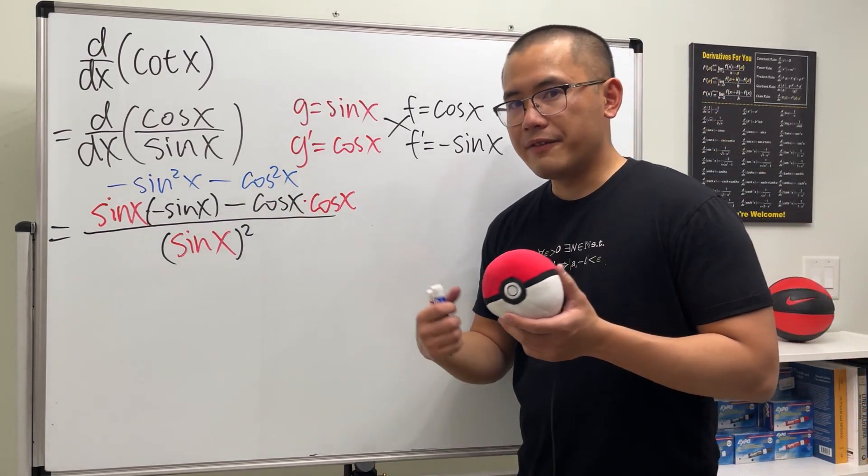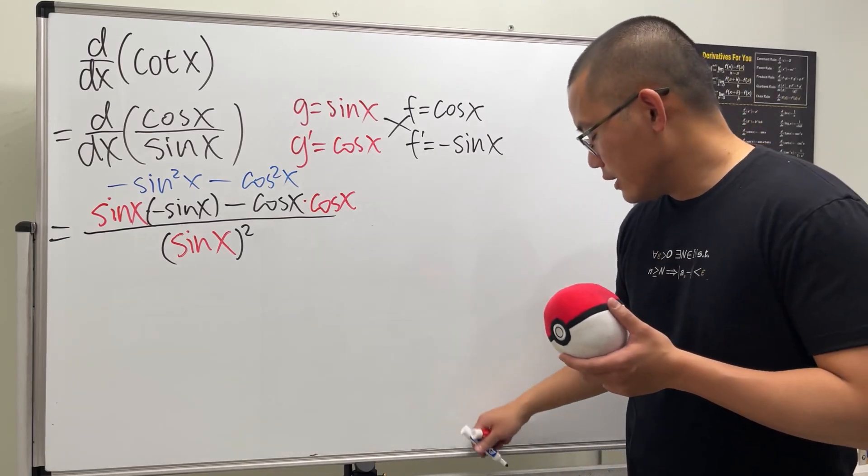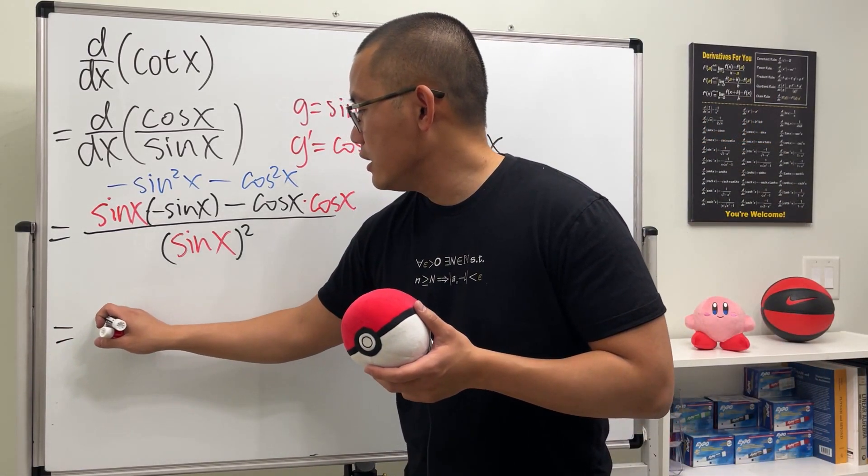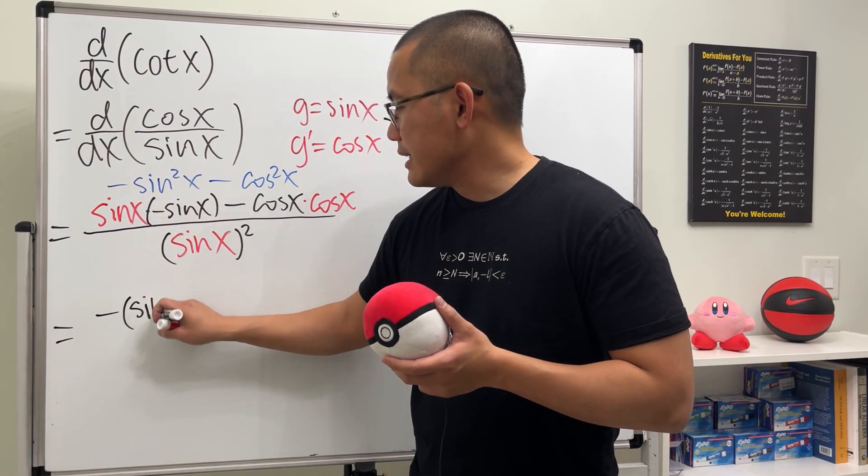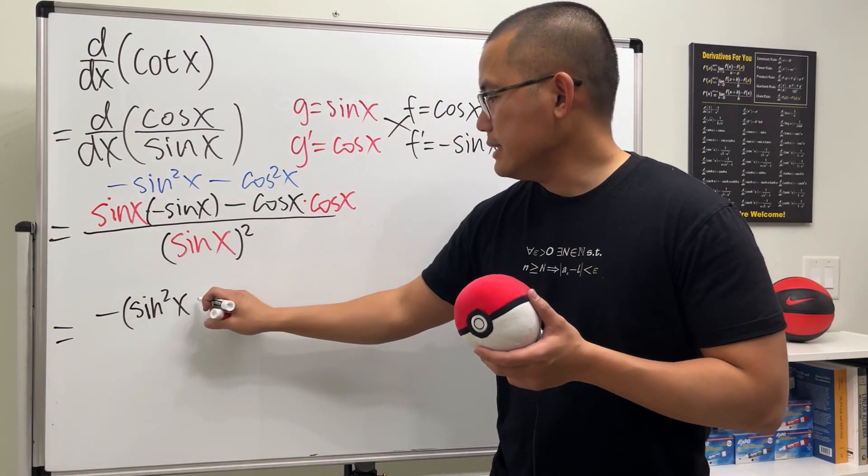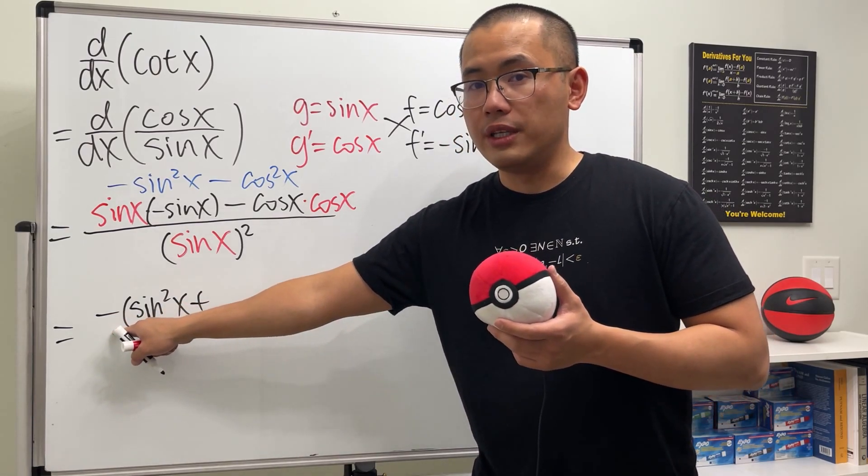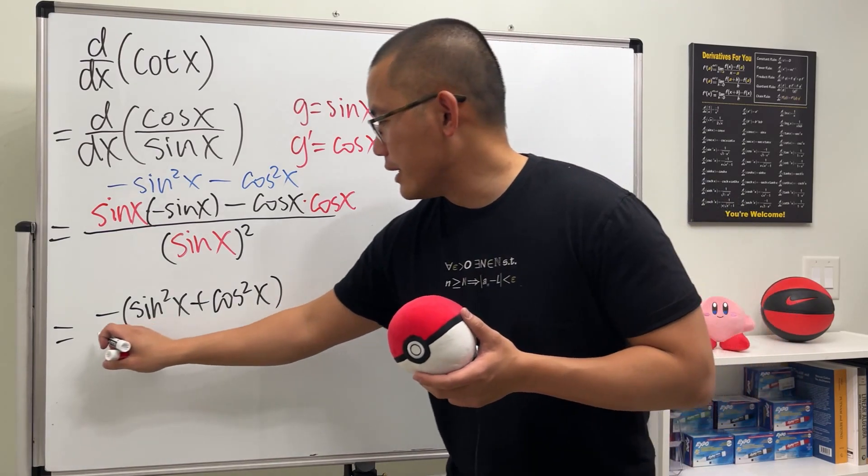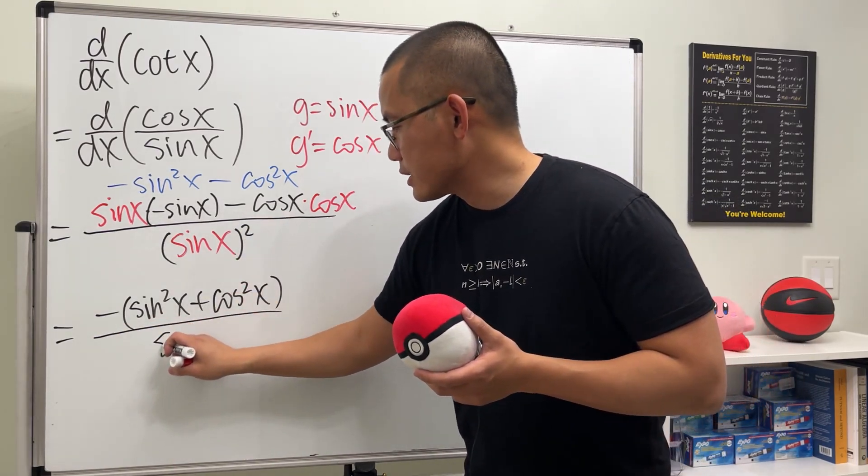Both of them have negative, so we can factor that out. So we are going to see that this is just going to be negative parentheses. And we have sinx squared plus, because we factor out negative right here already. And then we have cosx squared. And all over sinx squared.